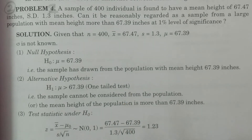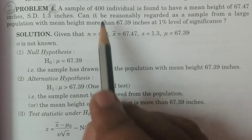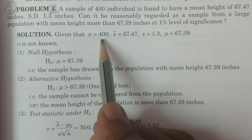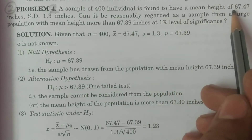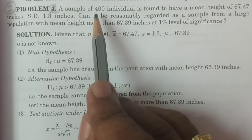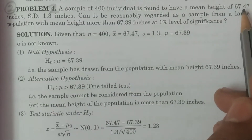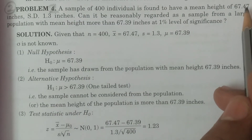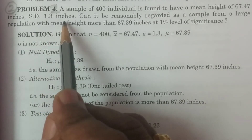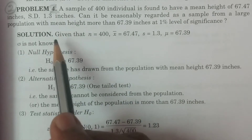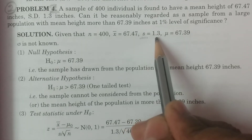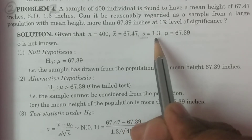Now write down what data is given. Given that a sample of 400 individuals, that is n = 400, is found to have a mean height — that is, the mean of the 400 sample individuals — x̄ = 67.47 inches. And standard deviation 1.3 inches, that is, standard deviation of the sample, s = 1.3 inches.